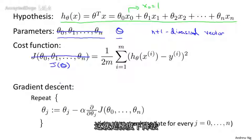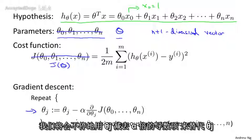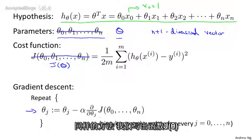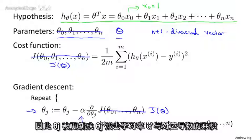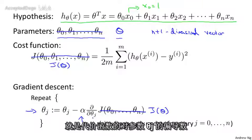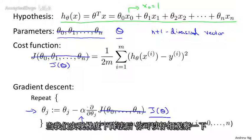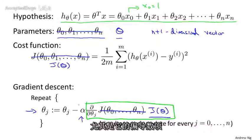Here's what gradient descent looks like. We're going to repeatedly update each parameter theta j according to theta j minus alpha times this derivative term. And once again, let me just write this as J of theta. So theta j is updated as theta j minus the learning rate alpha times the derivative or partial derivative of the cost function with respect to the parameter theta j. Let's see what this looks like when we implement gradient descent. And in particular, let's go see what that partial derivative term looks like.